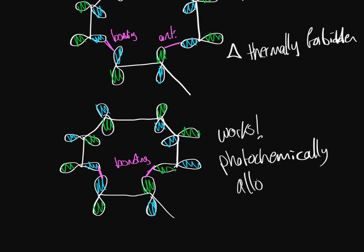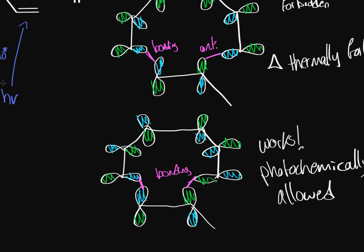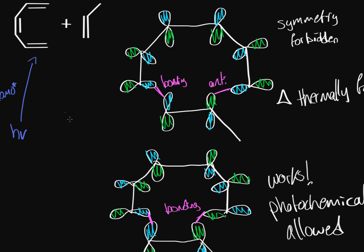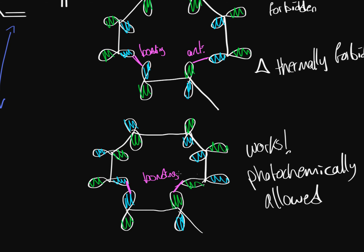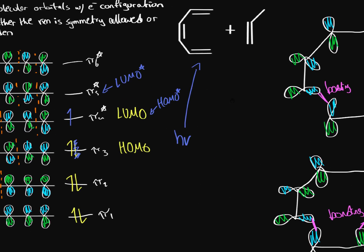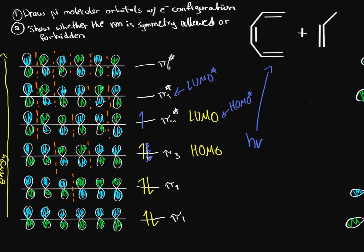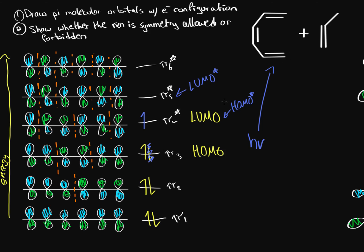So by using UV light on hexatriene to excite one of its electrons, we can get the Diels-Alder reaction to work. That's how you draw molecular orbitals for a conjugated system and determine whether a reaction is symmetry allowed or symmetry forbidden.